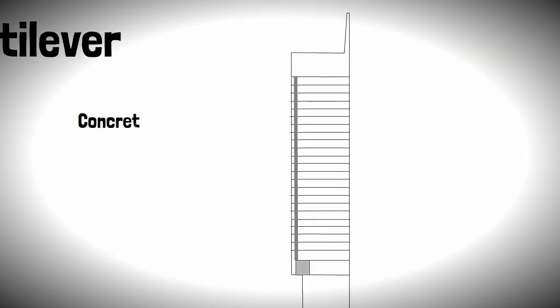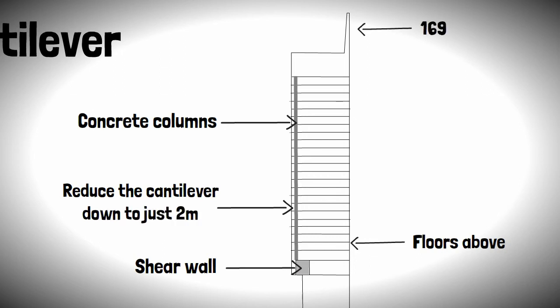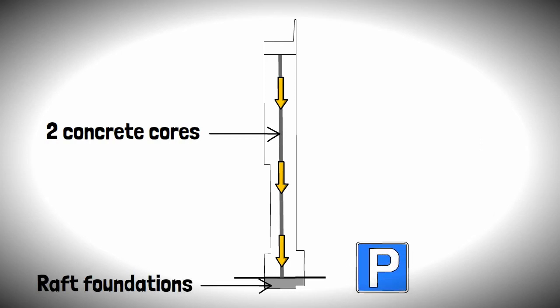To support this cantilever, concrete columns ran from the sheer walls at floor 22, gradually stepping out in the floors above to reduce the cantilever down to just 2 meters, with the building topping out at 169 meters into the sky. To hold up the entire tower, two concrete cores would run up the building, which would transfer loads down into the ground via raft foundations, which would double up as a two-story underground car park.